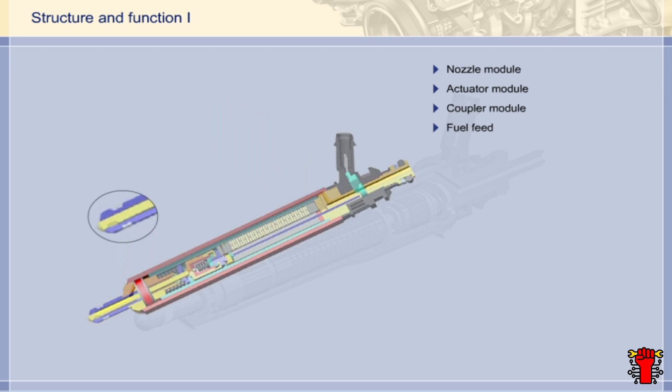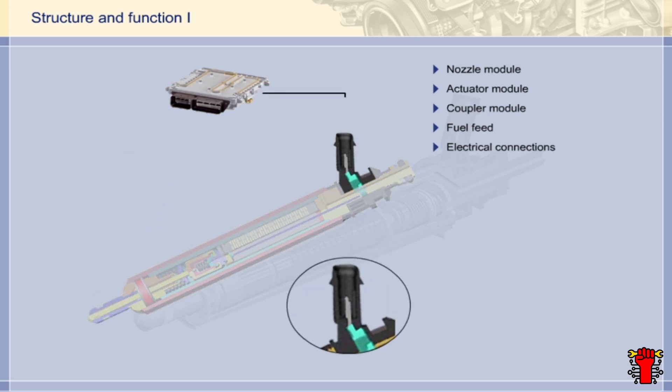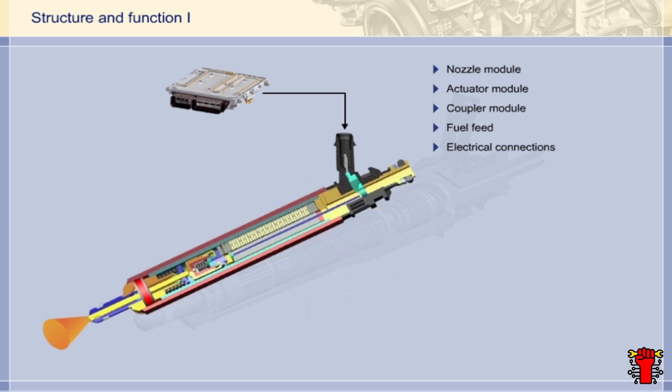The fuel feed line supplies the injector with fuel at high pressures of up to 200 bar. The injector is actuated by the ME control unit via the electrical connections. The operating voltage is between 125 and 160 volts. The control current approximately 8 amperes.